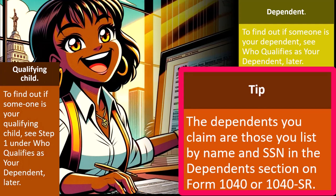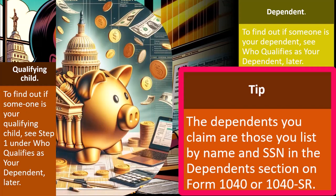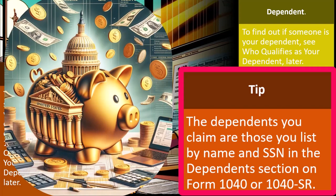In practice, the person who files first is probably going to have their tax return processed more easily, because that dependent's social security number had not yet been used at that point.